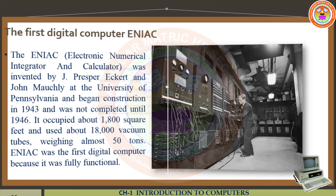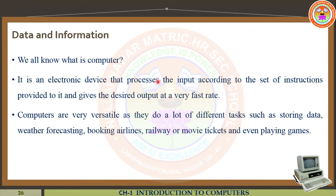Now today we are going to start 1.4, Data and Information. We already know what a computer is — it is an electronic device that processes the input according to the set of instructions provided to it and gives the desired output at a very faster rate. This is the definition of computer, and it is one of the very versatile machines.